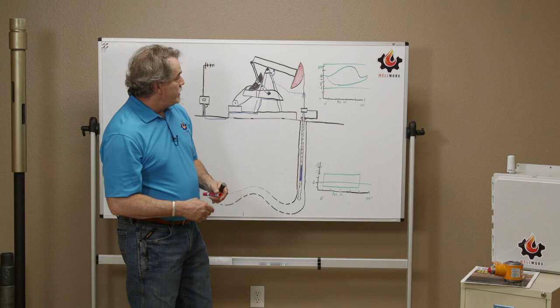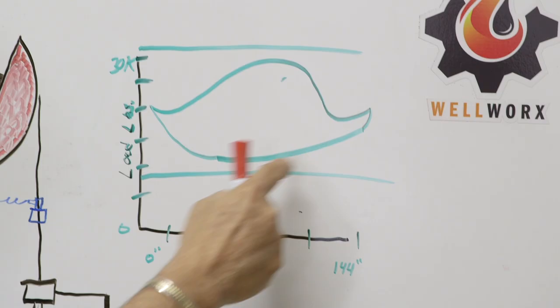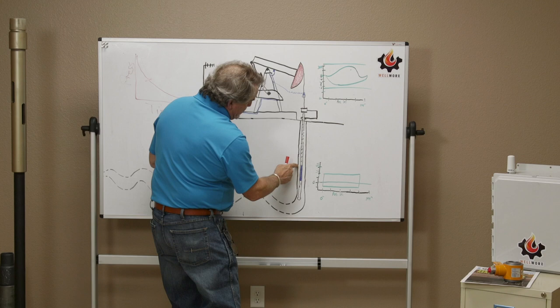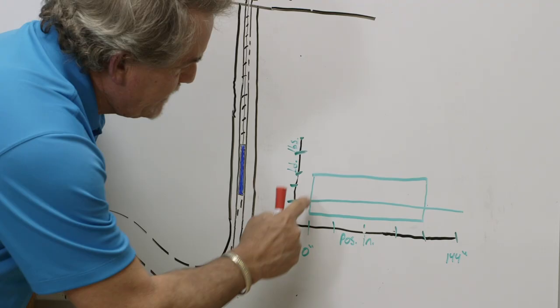and so what we do is this. We measure this data at the surface, every stroke of the pumping unit, and then mathematically, we walk down this rod string, and we determine what the load would be at the pull rod of the pump, and then we plot that here. And that's the downhole card.